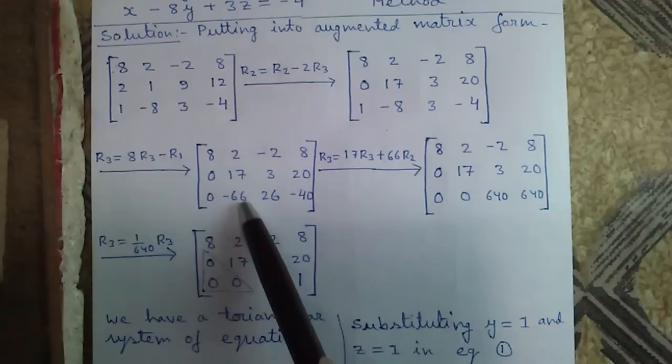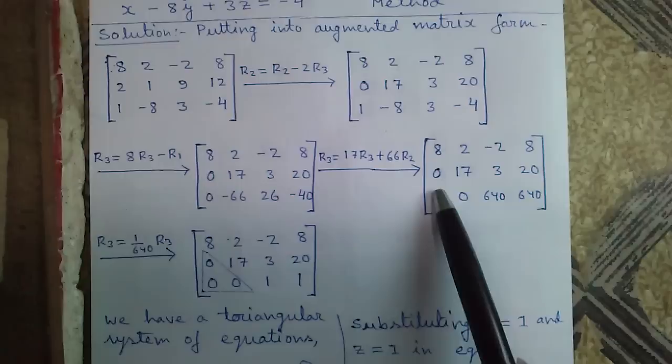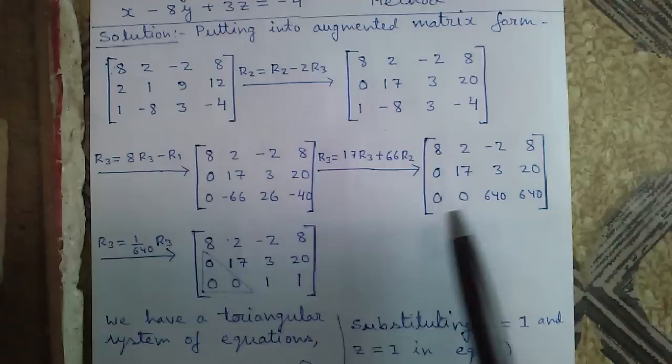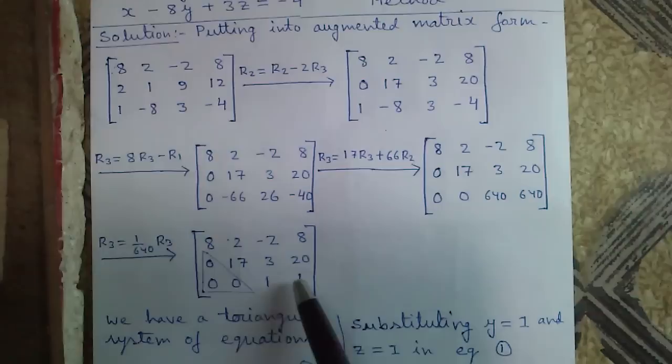To bring a 0 here, we can multiply R3 by 17 and add 66 times of R2 with that. So R3 equals 17R3 plus 66R2. Now we have got three zeros, but there are two 640s here. To eliminate this, we can divide R3 by 640. So R3 equals R3 times 1 by 640, and we will get 1.